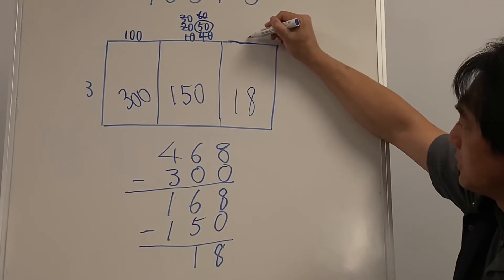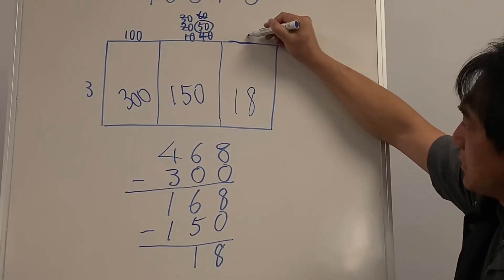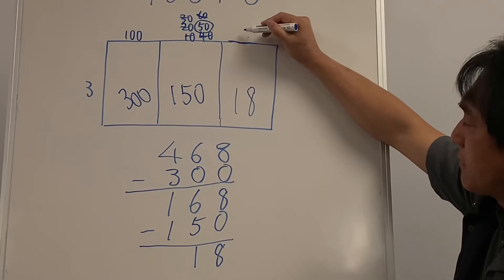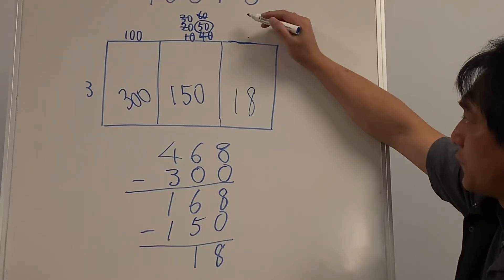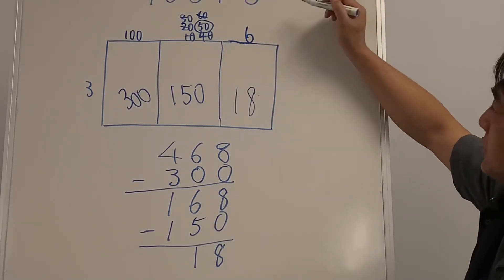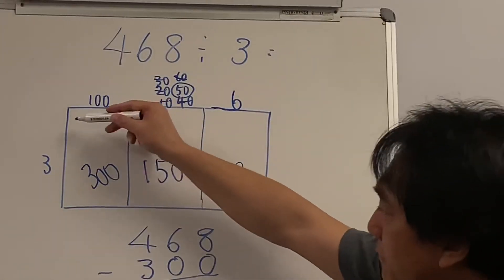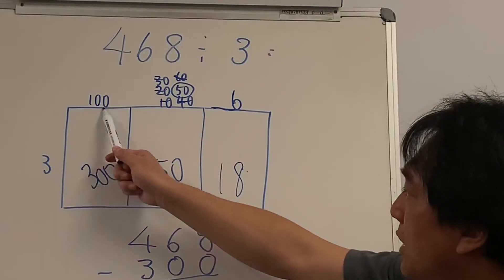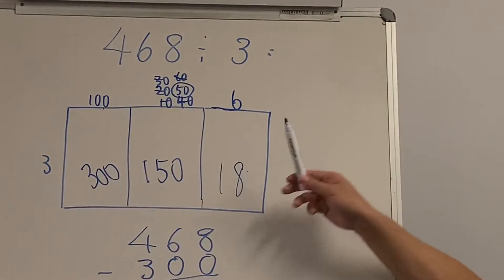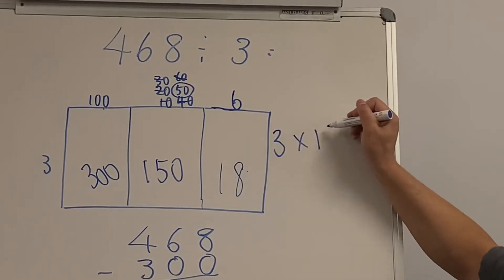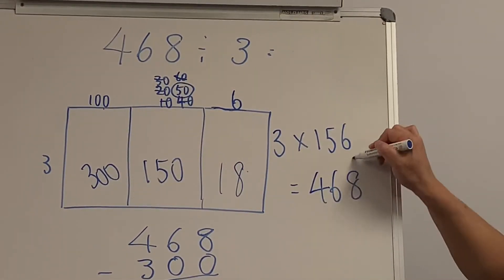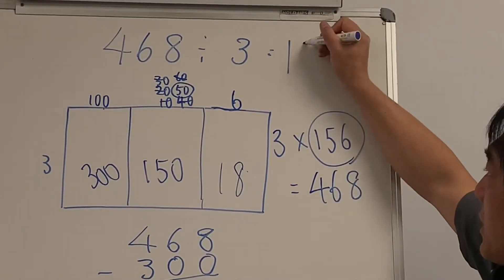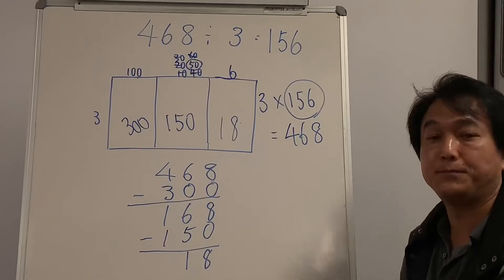In the units column: 1×3=3, 2×3=6, 3×3=9, 4×3=12, 5×3=15, 6×3=18. So 6 threes make 18. That means 3 lots of 156 equals 468 — the answer is 156.